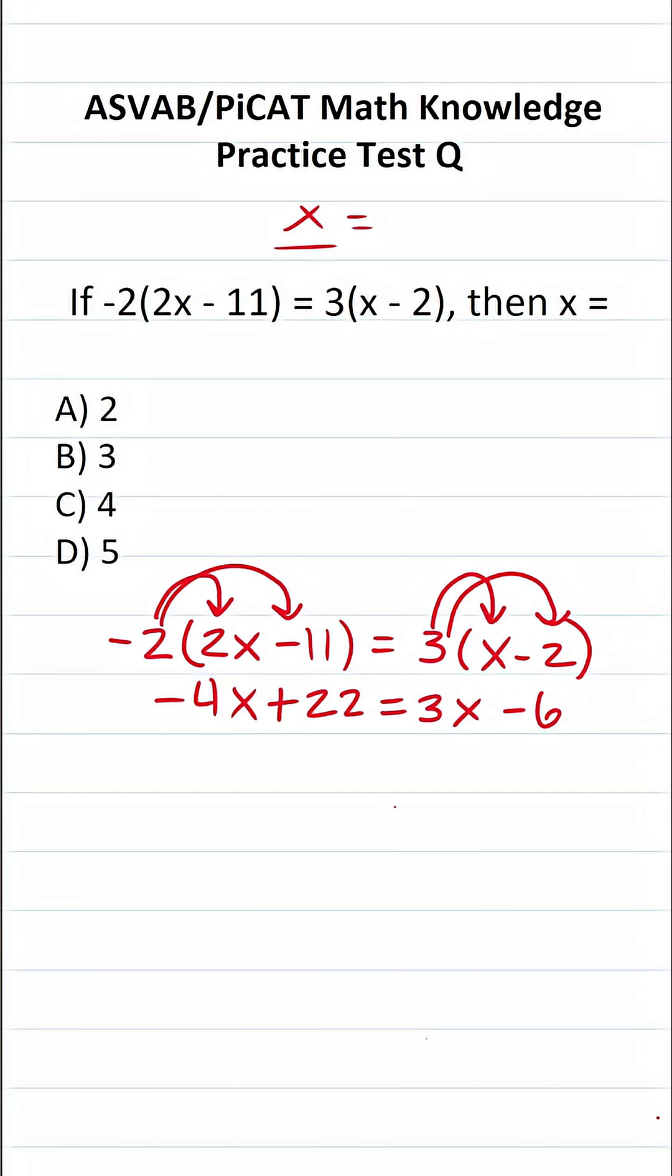From here, we want to move all of our x's to one side of the equation and all of our whole numbers to the other side of the equation. I'm actually going to add 4x over here, and at the same time, I'm going to move 6 over here via addition.